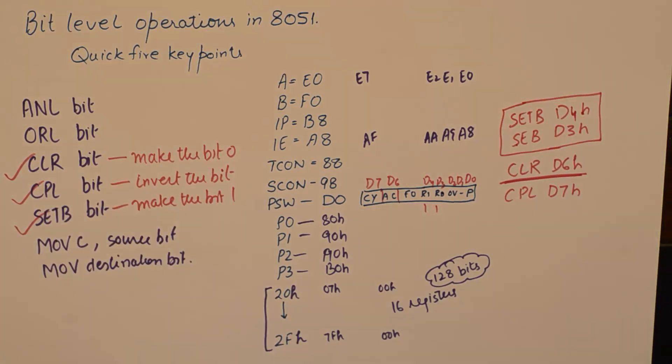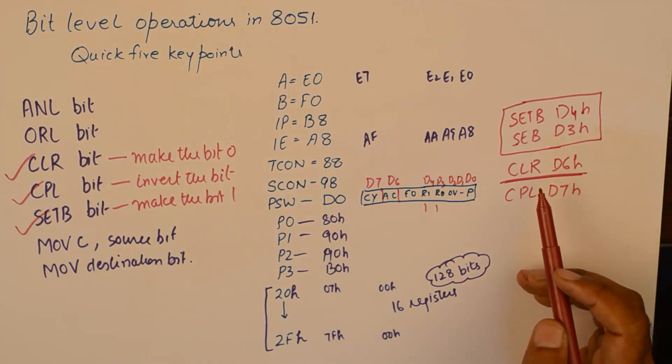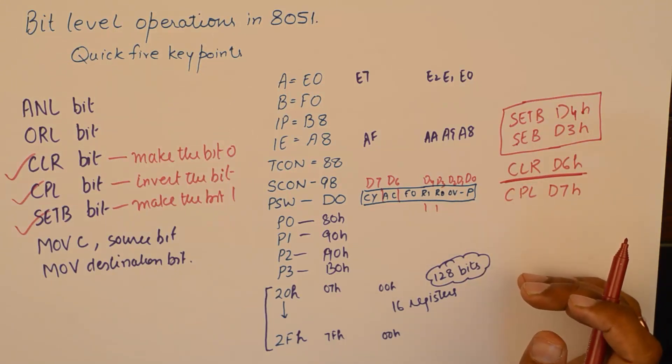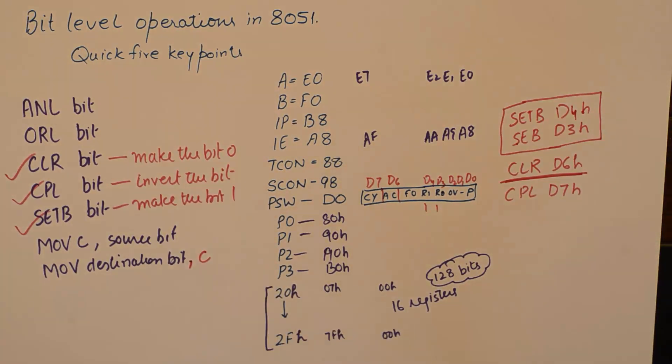So these three instructions are super easy. They are the only permissible instructions for making the bits 0, 1, or complement. Then if you want to move anything between the bits, it can be only done through carry.